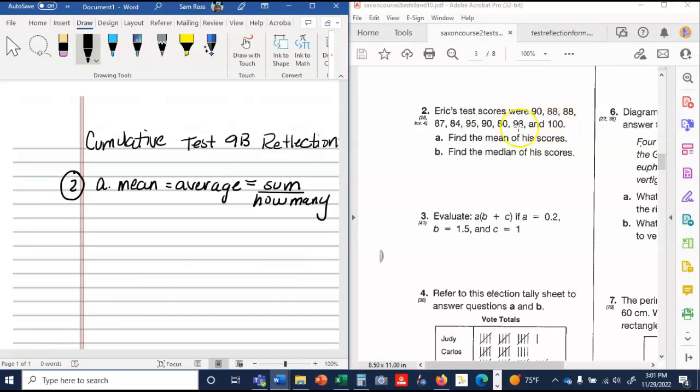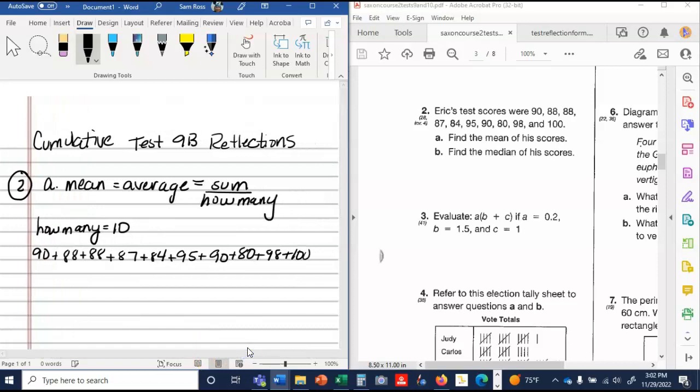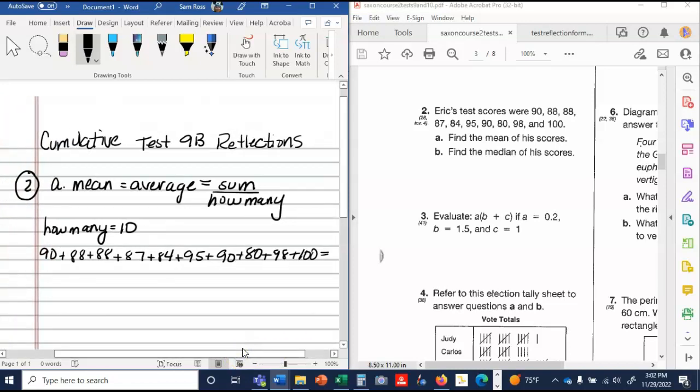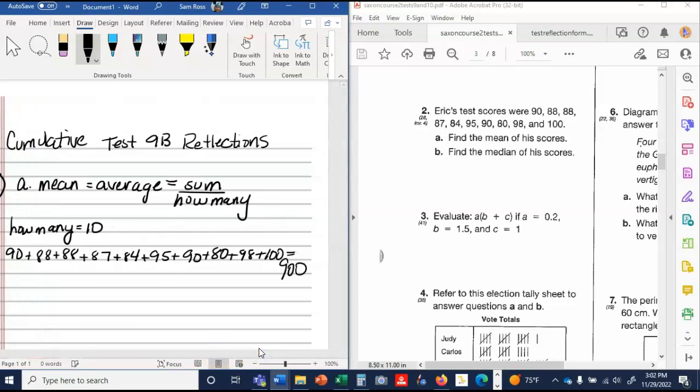When I count how many I have here, I have ten total. I have my how many is equal to 10. So the sum is going to be 90 plus 88 plus 88 plus 87 plus 84 plus 95 plus 90 plus 80 plus 98 plus 100. I'm going to go ahead and add that. So for my sum, I get 900. So if I'm going to do my average, that's the sum over how many, which gives me 90.